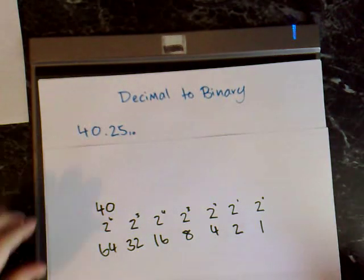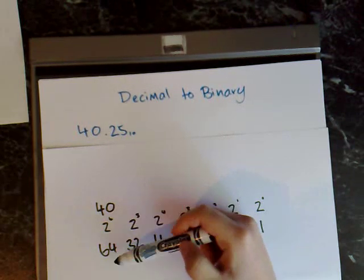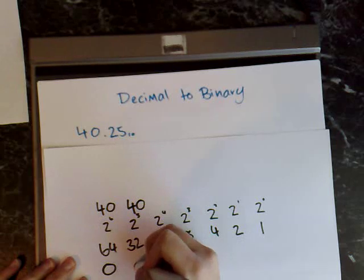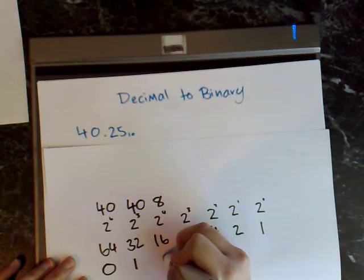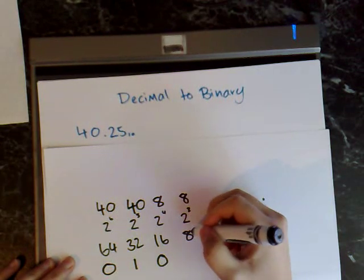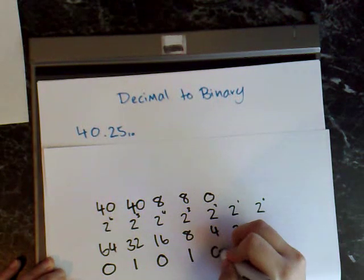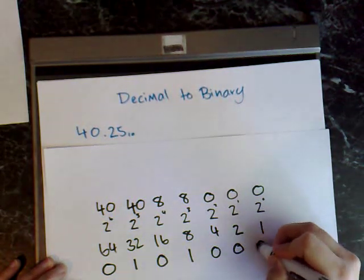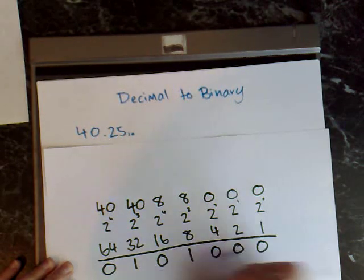Write the number we want to convert at the top, working with the whole part first. 40 divided by 64 is 0 — carry the 40 across. 40 divided by 32 is 1 with a remainder of 8. 8 divided by 16 is 0 — carry the 8 across. 8 divided by 8 is 1 with a remainder of 0. Then 0 divided by 4 is 0, 0 divided by 2 is 0, and 0 divided by 1 is 0. This has come out as a series of zeros and ones — it's already in binary form, and this bottom row is the answer for the whole part.